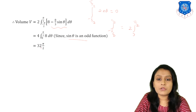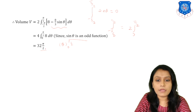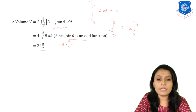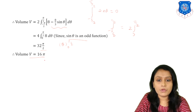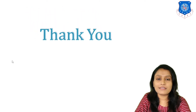Integrating: 4 times 8 equals 32, multiplied by theta evaluated from 0 to pi/2, giving 32 times pi/2. Simplifying, the volume equals 16pi. I hope you have understood throughout the session. Thank you for watching.